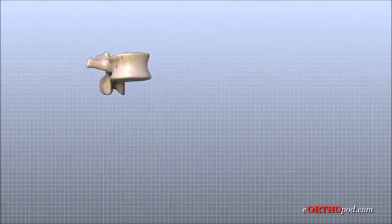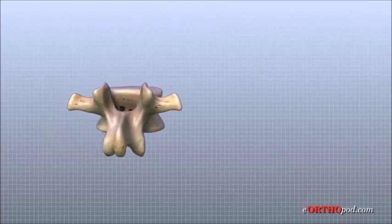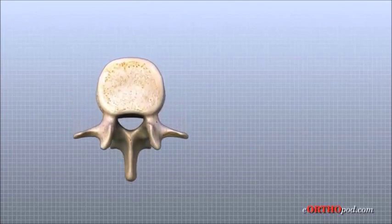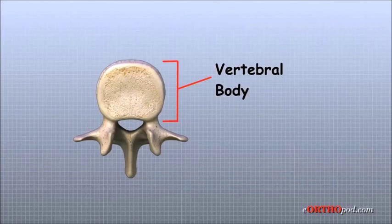Each vertebra is formed by a round block of bone called a vertebral body. The lumbar vertebral bodies are taller and bulkier compared to the rest of the spine. This is partly because the lumbar spine has to withstand pressure from body weight and from daily actions like lifting, carrying, and twisting.